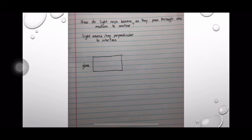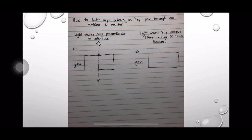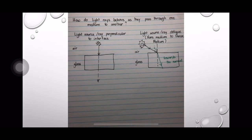How do light rays behave as they pass through one medium to another? If the light ray is perpendicular to the interface and it passes from air to glass, the light ray will just pass through unbent. When the light ray is incident at an angle to the interface and it passes from air to glass, the light ray will bend towards the normal. This is because the light ray slows down from a rare medium to a dense medium. The angle of incidence is greater than the angle of refraction.